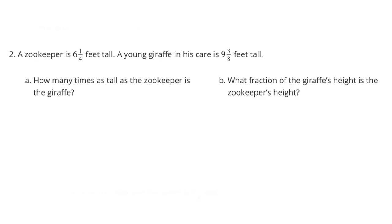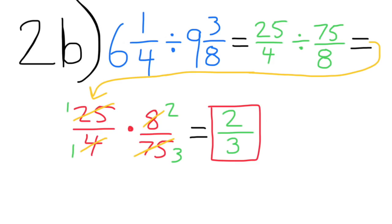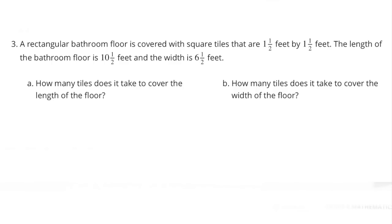Part b: what fraction of the giraffe's height is the zookeeper's height? Six and one-fourth divided by nine and three-eighths equals twenty-five-fourths divided by seventy-five-eighths, which is the same as twenty-five-fourths times eight seventy-fifths. That simplifies to two-thirds. The zookeeper is two-thirds the height of the giraffe.